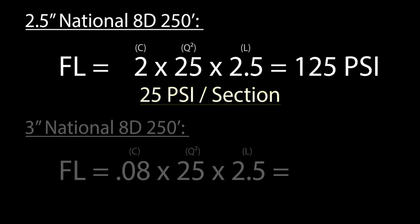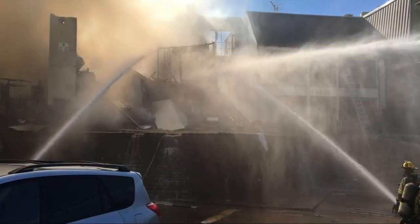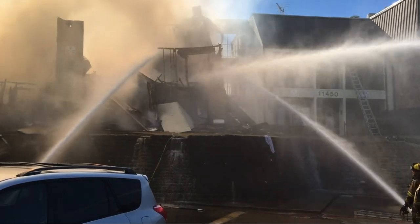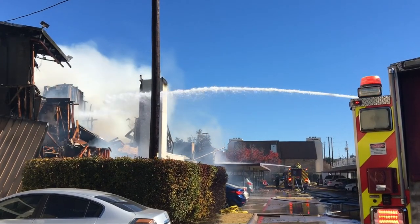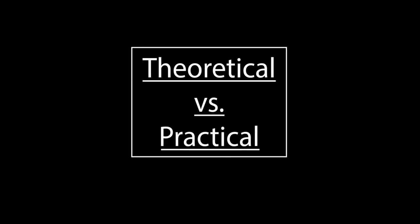However, by increasing our hose diameter by only half an inch, we can drop the friction loss to only 10 PSI per section on our 3 inch hose. As you can see, it is critical to ensure proper hose line selection when supplying master streams to ensure efficient utilization of the pump and reduce engine RPMs.